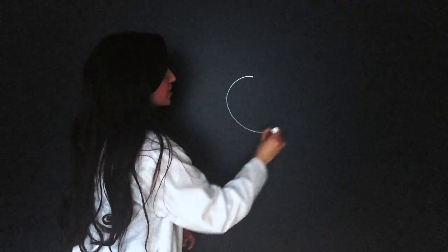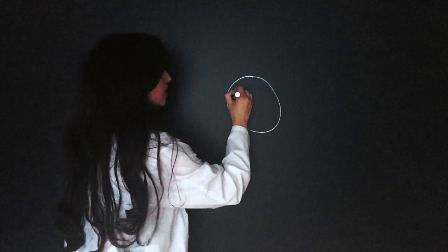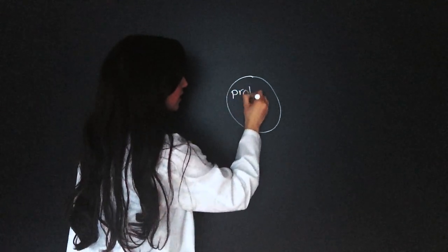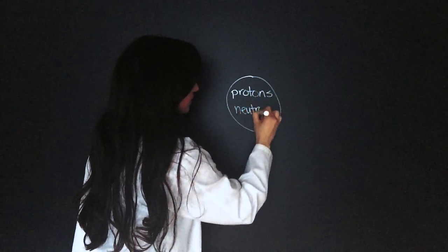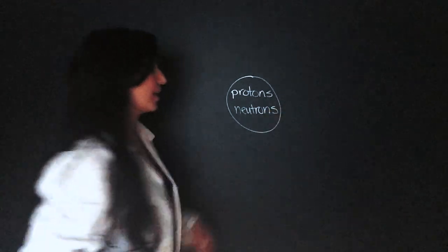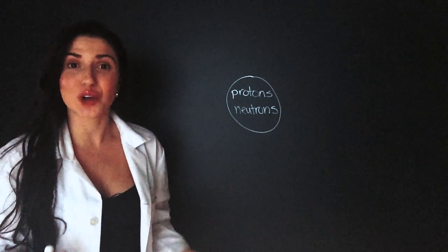So the first thing is the nucleus. We draw a circle like this. Inside this nucleus are the protons and neutrons. That's what makes up the mass of an atom. Now we can draw the orbits.